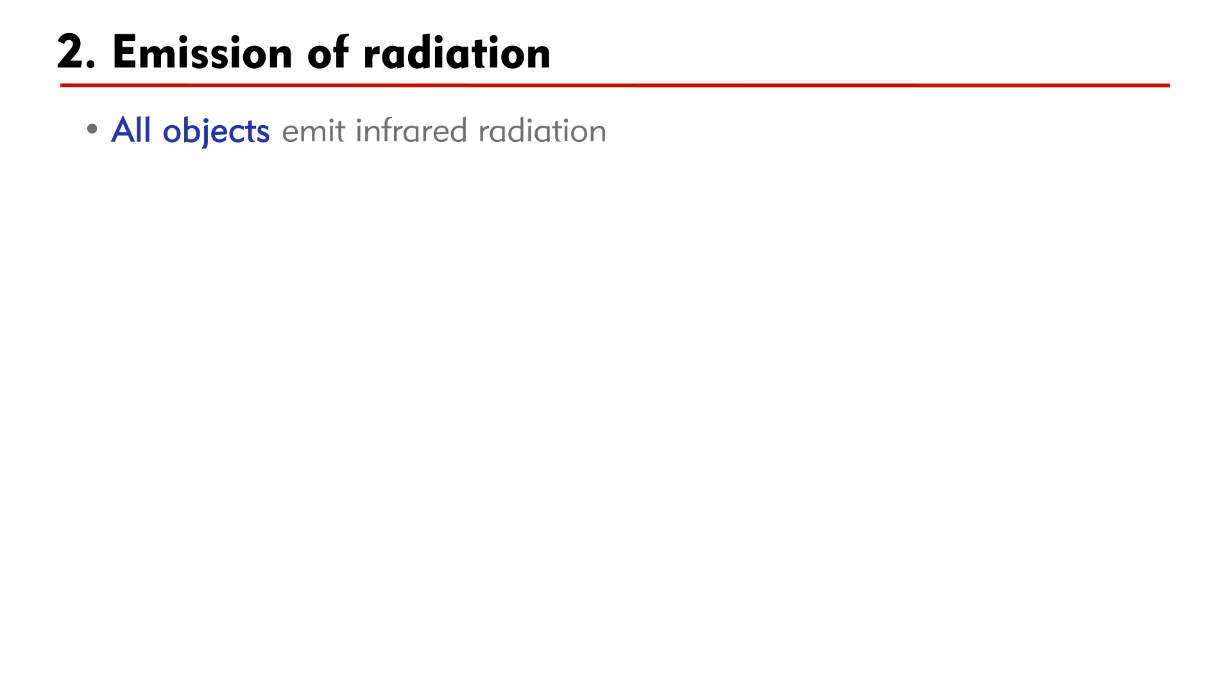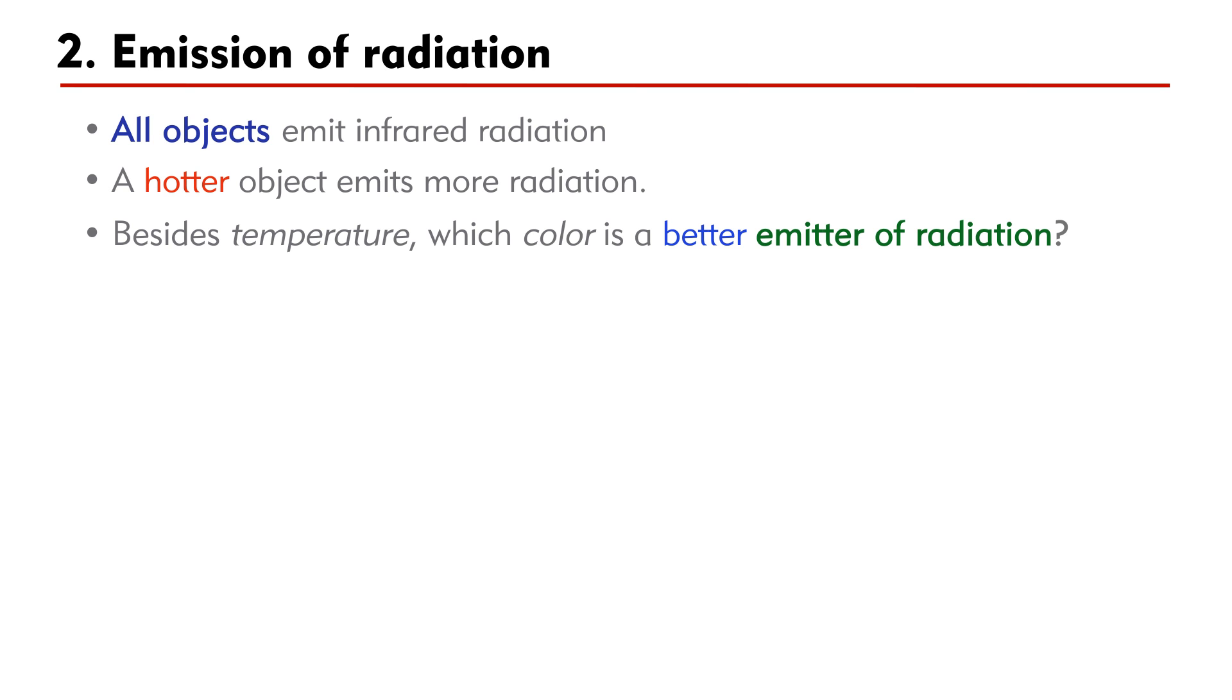As I have just mentioned, all objects emit infrared radiations. A hotter object emits more radiation. Besides, we want to know which color is a better emitter of radiation. Silvery or dull black? Let's carry out an experiment to find out the answer.